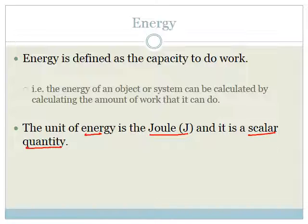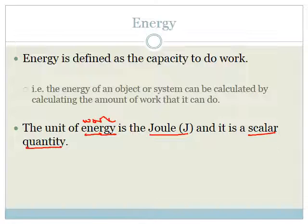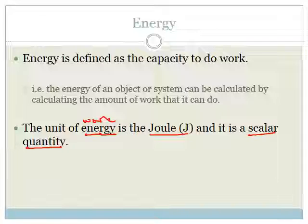Remember about work — I could actually replace this. Instead of the word 'energy,' I could have said the unit of work is the joule and it is also a scalar quantity. So energy is the ability to do work, and therefore the unit is joules and it is a scalar quantity.